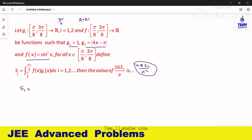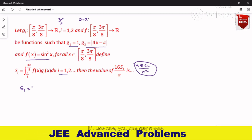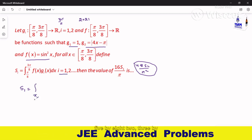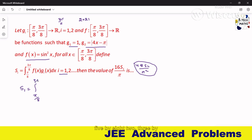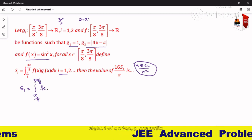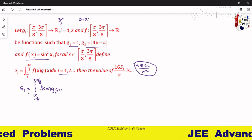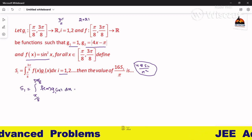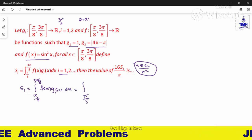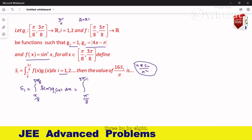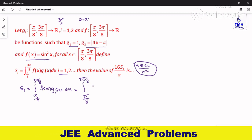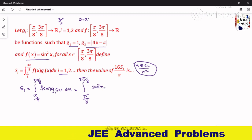So S1, find out first what is S1. S_i, i is here 1. If i is 1, you can say S1, so π/8 to 3π/8, f of x into g1 of x, because i is 1, dx. So π/8 to 3π/8, what is f of x? You have sine squared x.